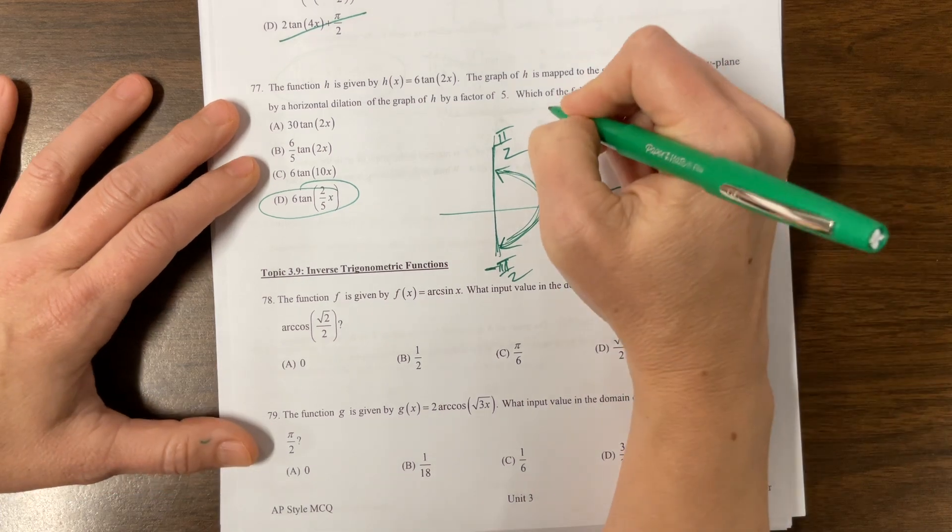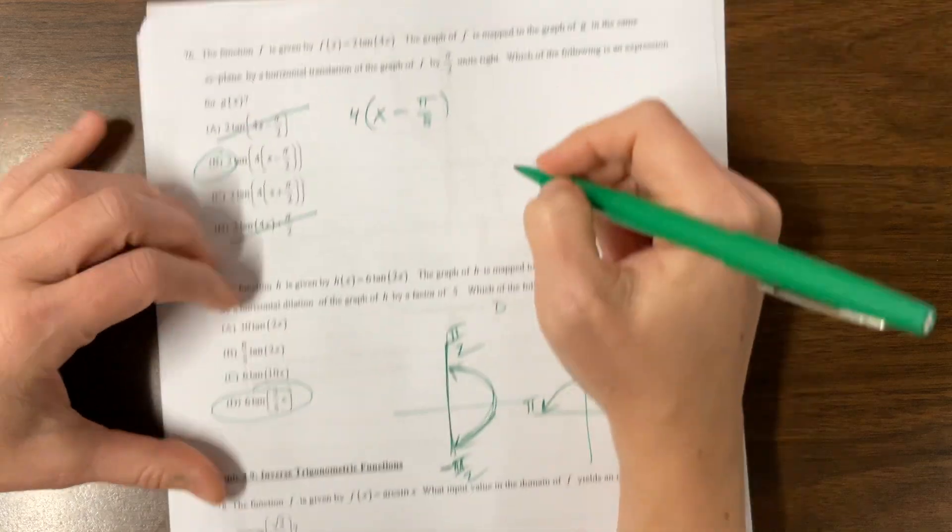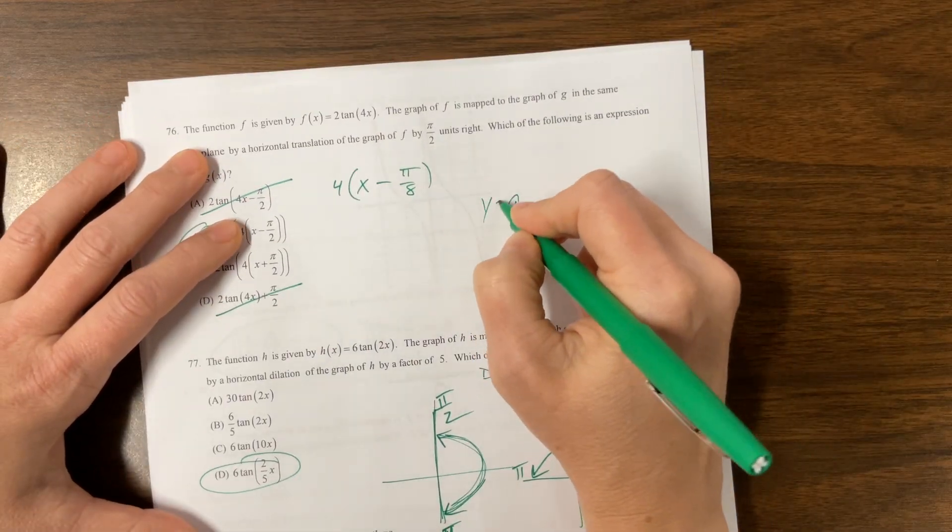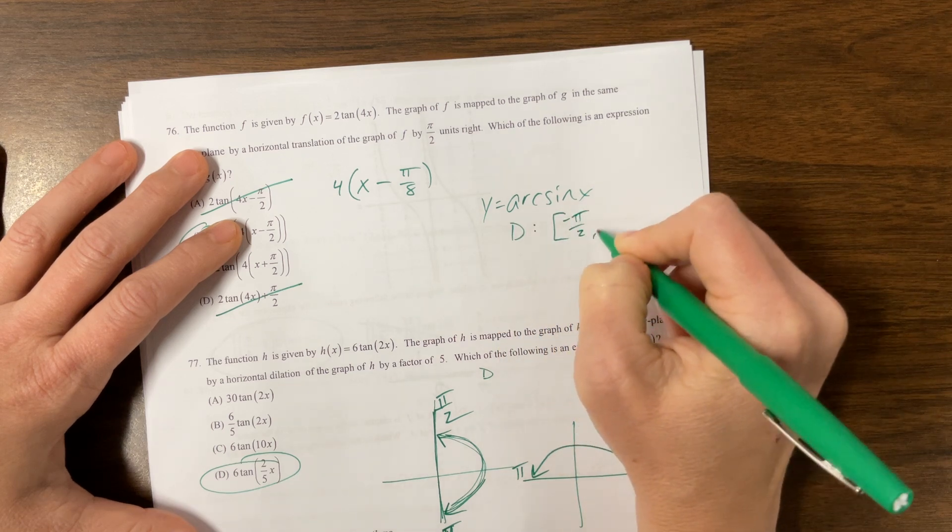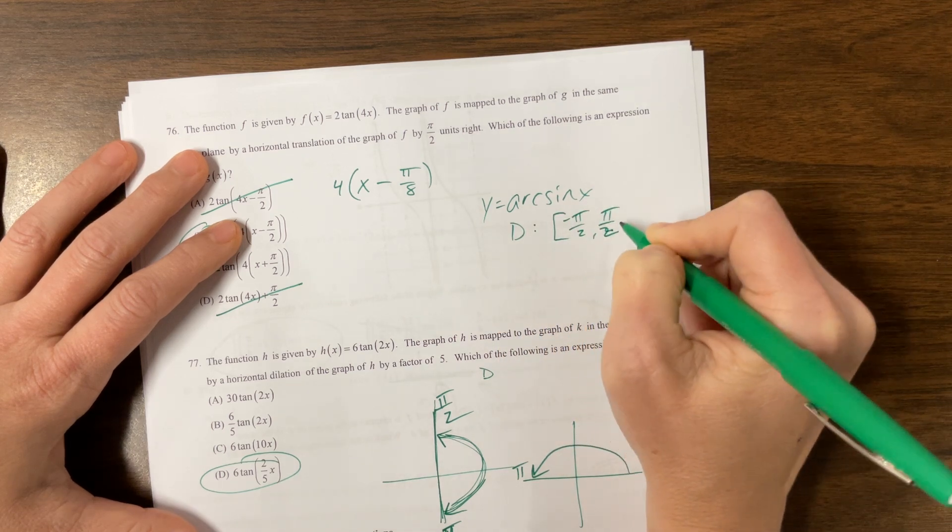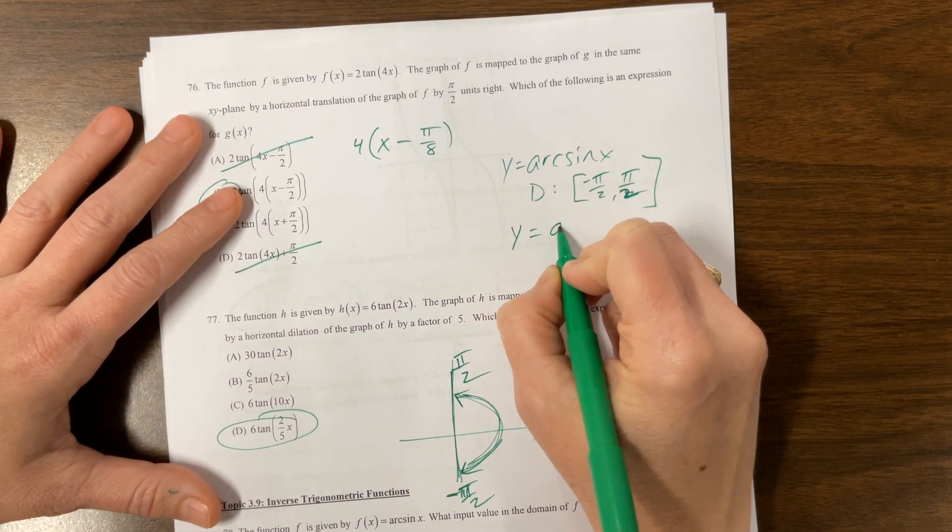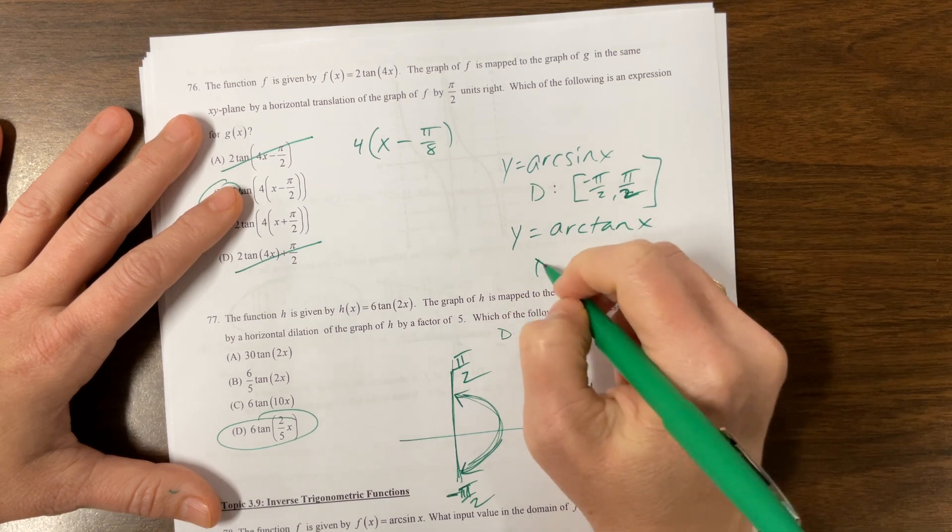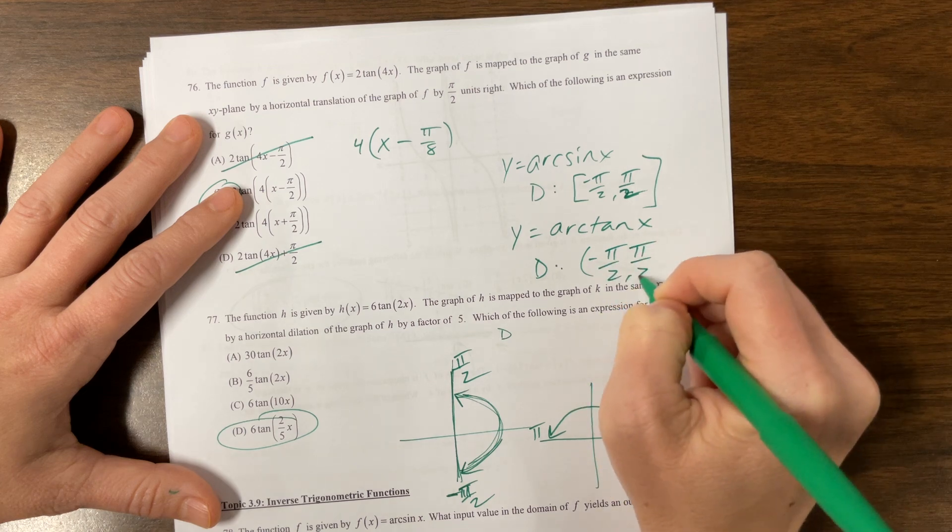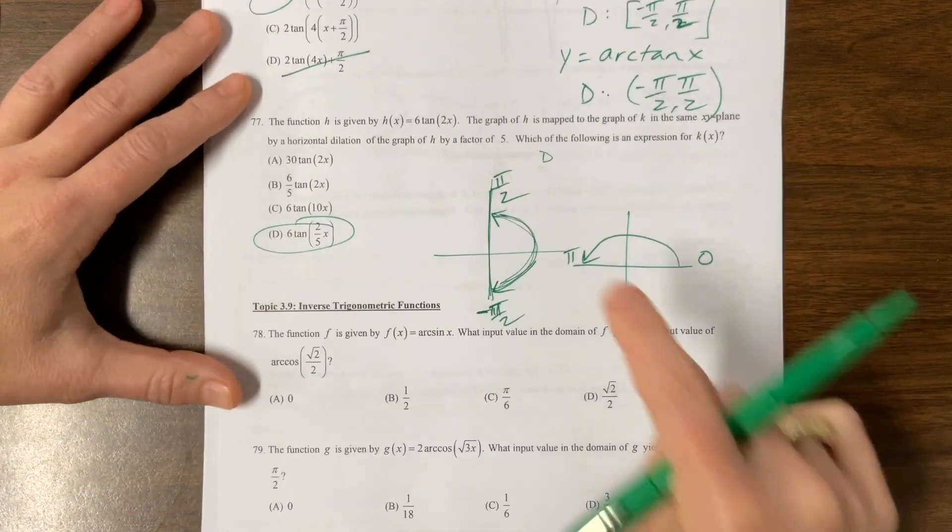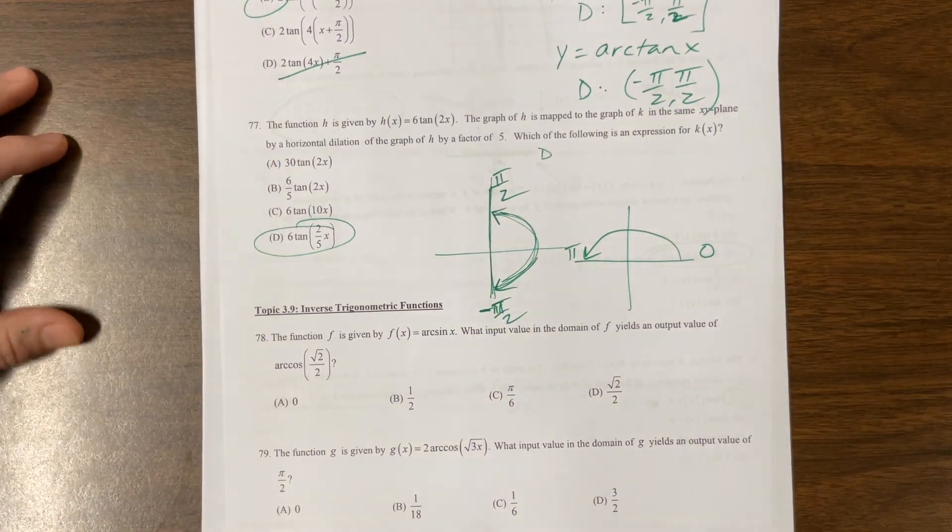The only difference is at pi over 2 and negative pi over 2, there's an asymptote. So the domain of arc sine, hang on, let me write it this way. If I have y is equal to arc sine of x, its domain would be hard brackets negative pi over 2 to pi over 2. And if I had y was equal to arc tangent, its domain would be soft brackets. So they behave in the same quadrants, but this doesn't have, it can't be negative pi over 2 and pi over 2 because it's not defined.